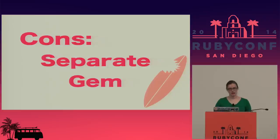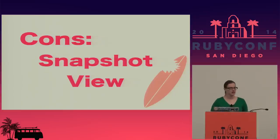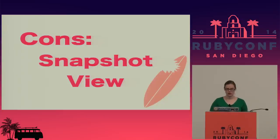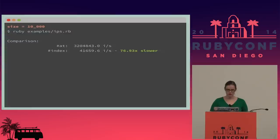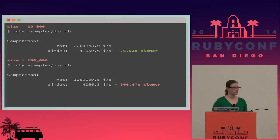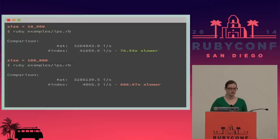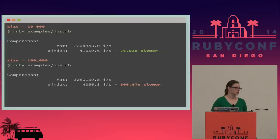What are some cons? It is a separate gem that you have to require. The other con is that it really only provides a snapshot view into the performance of the code. For example, the comparison block output for an array of 10,000 elements differs from the output for an array of 100,000 elements — the comparison shows very different amounts of how much slower one is. That's a 10x difference. Why is that?